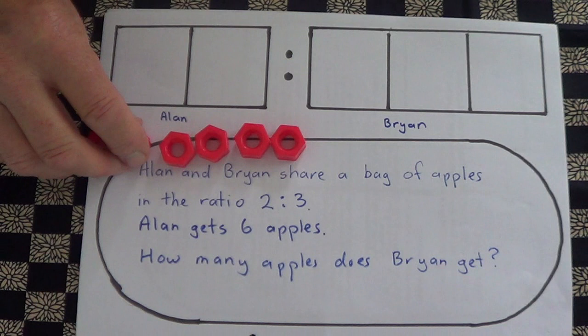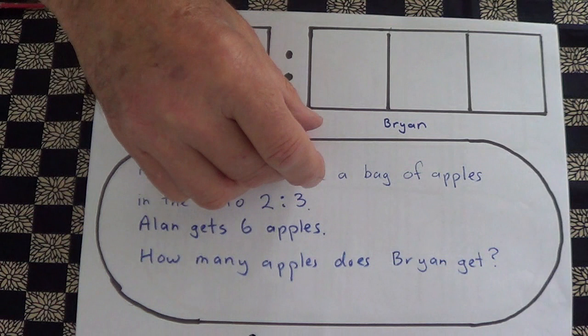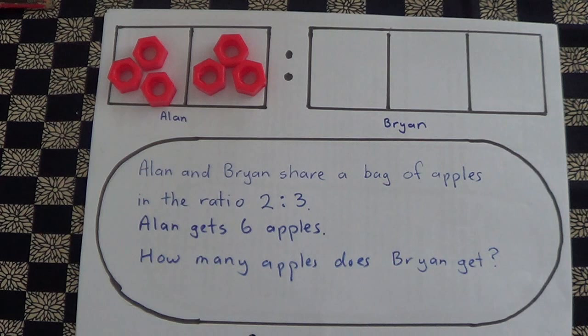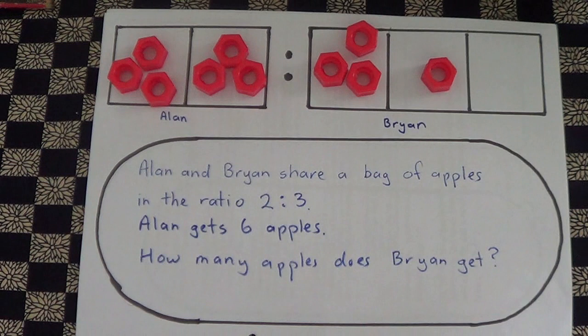We put one in each for a start, then a second one, so we've got two in each. We end up with three in each. That means Brian has to have the same number of apples in each of his boxes, so we put three there, three there, and three there.